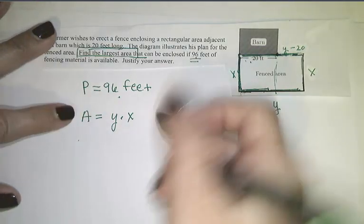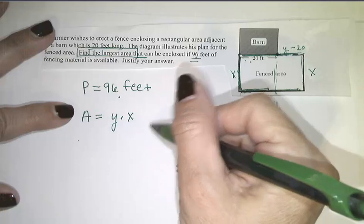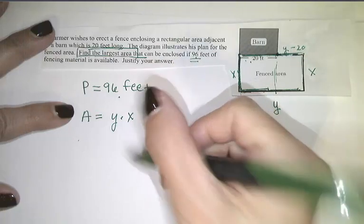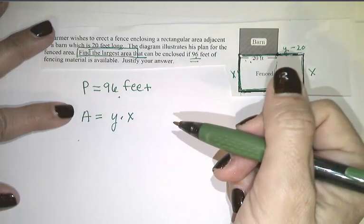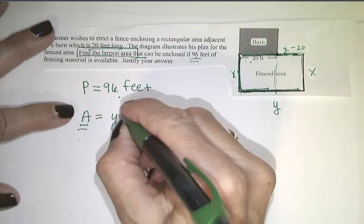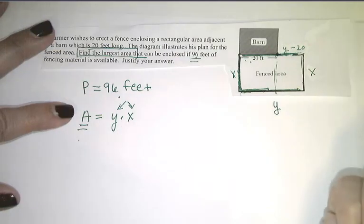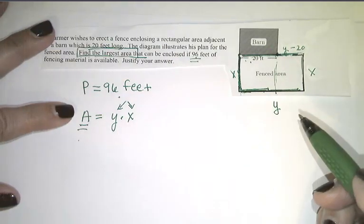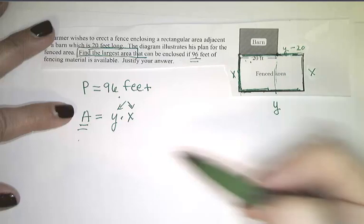But I have a little bit of a problem because my next step is to find the critical numbers, which means I need to take the derivative, which means I want my area function to be a function of one variable. But right now, it is a function of two, right? Both y and x are unknown. So those are two different variables.